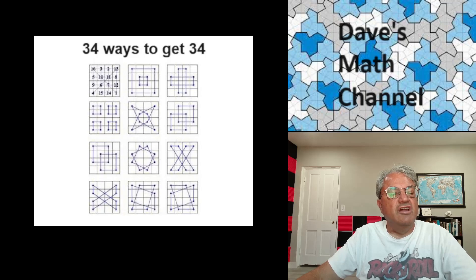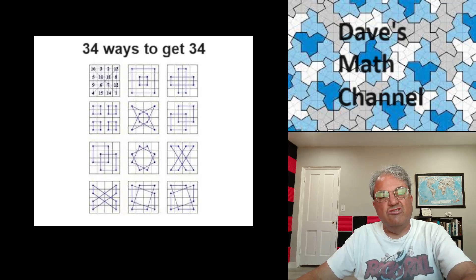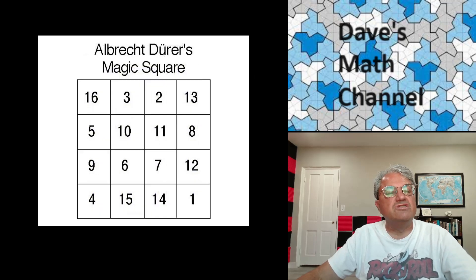Pretty amazing. And I guess there's more parallelograms. So that's 34 ways you can get 34 out of Durer's magic square. Pretty amazing. And it was a pretty amazing discovery by this Renaissance man, Albrecht Durer, discovered in 1514. I guess there's one last thing I forgot to mention.